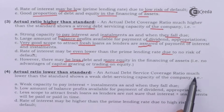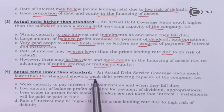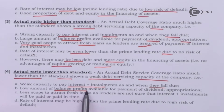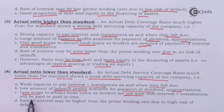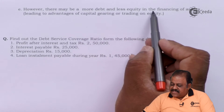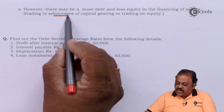An actual debt service coverage ratio much lower than the standard shows weak debt servicing capacity, weak capacity to pay interest and installment as due, low balance profit for dividends and appropriation, and less scope to attract fresh loans. The rate of interest may be higher than the prime lending rate due to high risk of default. However, there may be more debt and less equity in financing assets, leading to an advantage of capital gearing or trading on equity.